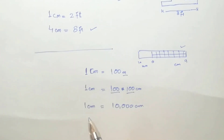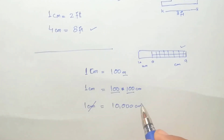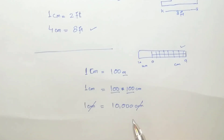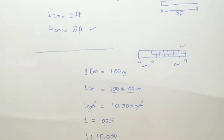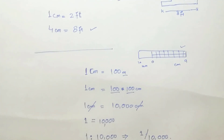Because the units on both sides must be equal and cancel out, we express the ratio as 1:10,000. This dimensionless ratio — where both numerator and denominator are in the same units — is the Representative Fraction.